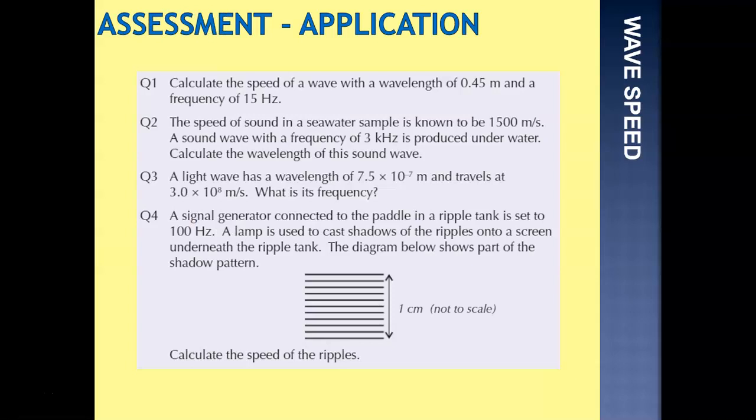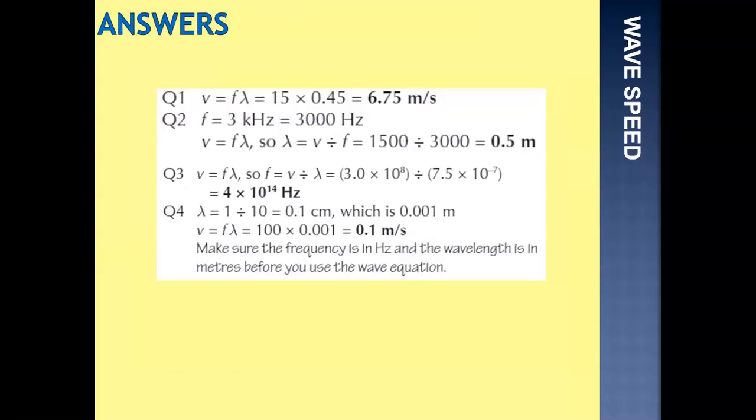Question three, a light wave with a wavelength of 7.5 times 10 to the minus 7 travelled at 3 times 10 to the 8, what's its frequency? Rearrange the equation, we end up with frequency is speed divided by wavelength, so that's 3 times 10 to the 8 divided by 7.5 times 10 to the minus 7, giving us a frequency of 4 times 10 to the 14 hertz.